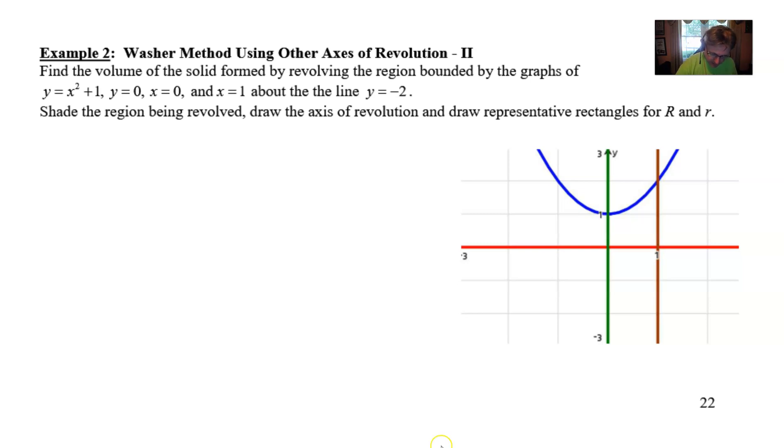So what I'm going to do here is I'm going to first of all draw in that line y equals negative 2, which would be down here. That red line is serving as the x-axis, so this will serve as our axis of revolution. And remember, I always like to sketch that in with a dashed line.